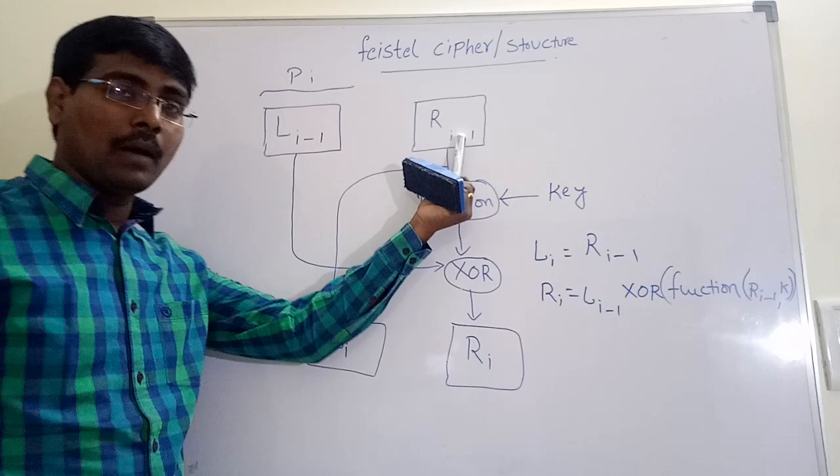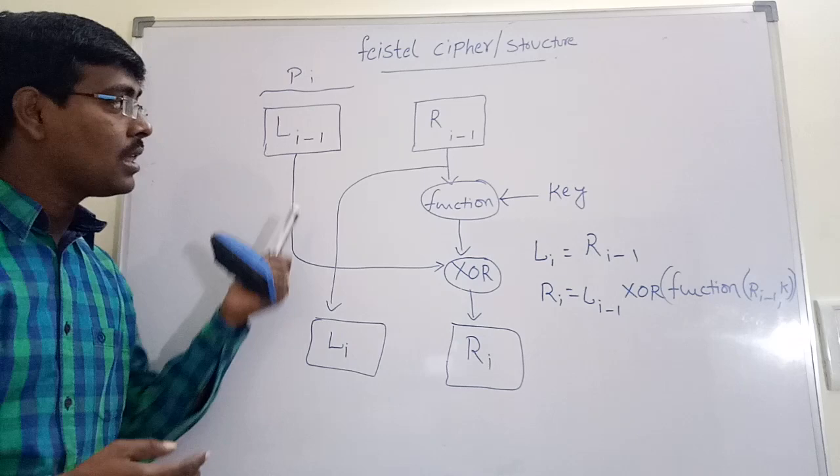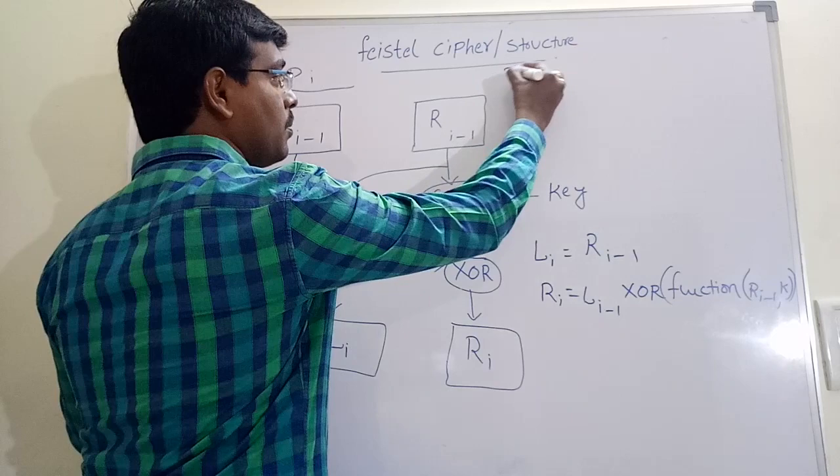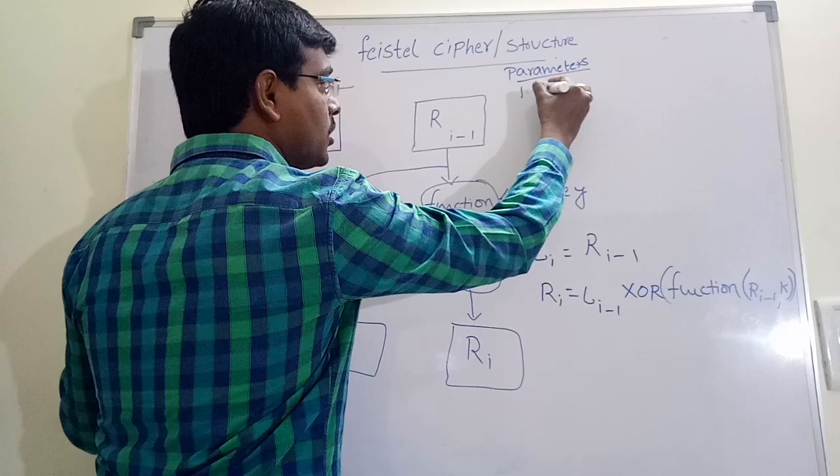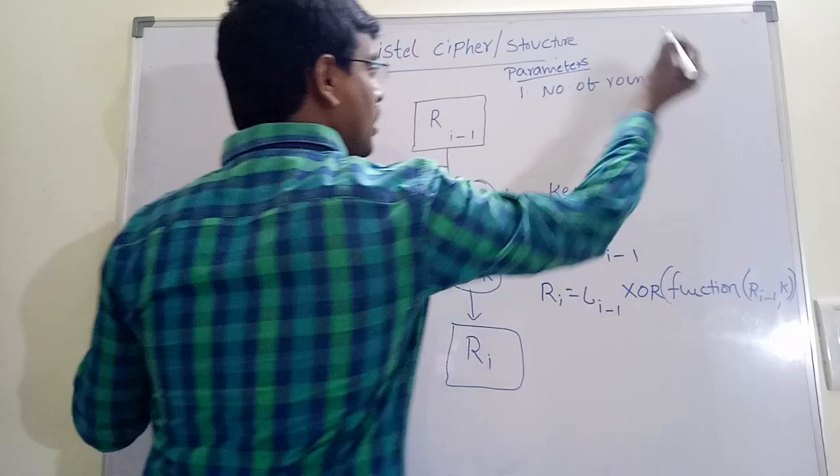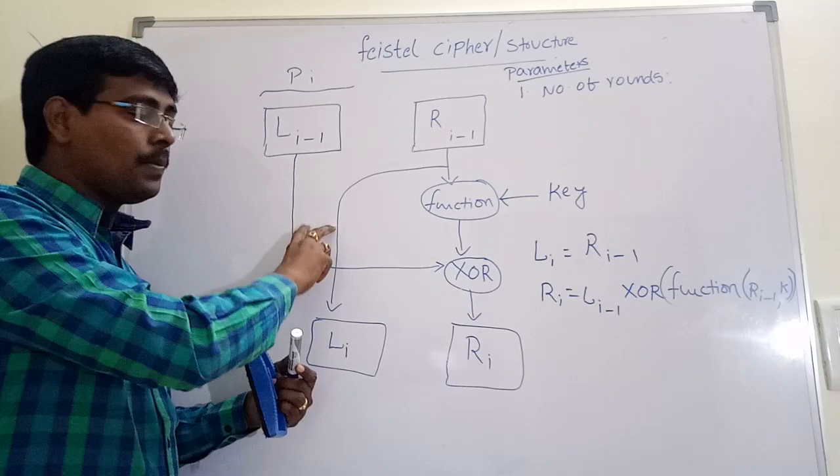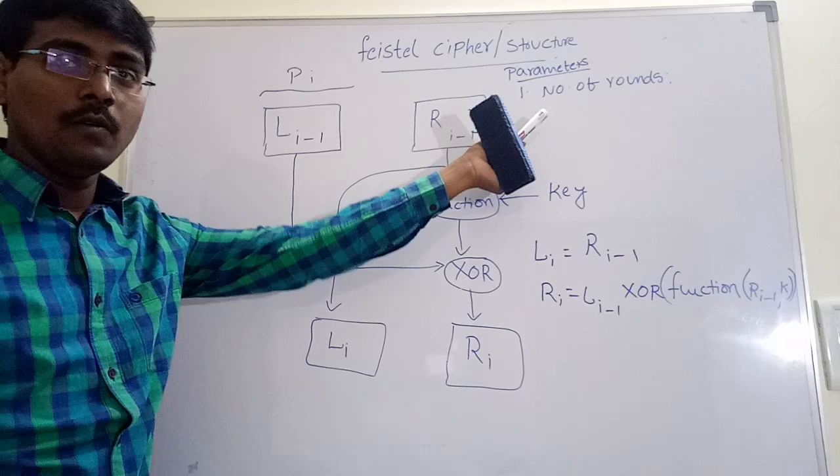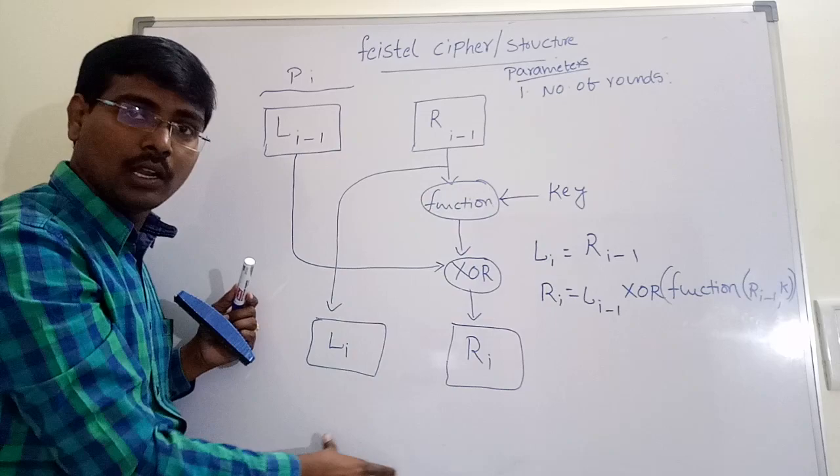The parameters that we are following on Feistel Cipher is, simply, the parameters are first, number of rounds. Almost maximum algorithms follow Feistel Cipher. It depends on algorithm, it changes the number of rounds. So if the number of rounds increases, suppose for example, this is round 1. We are applying function, we are getting 1 round. If the number of rounds increases, complexity also increases.